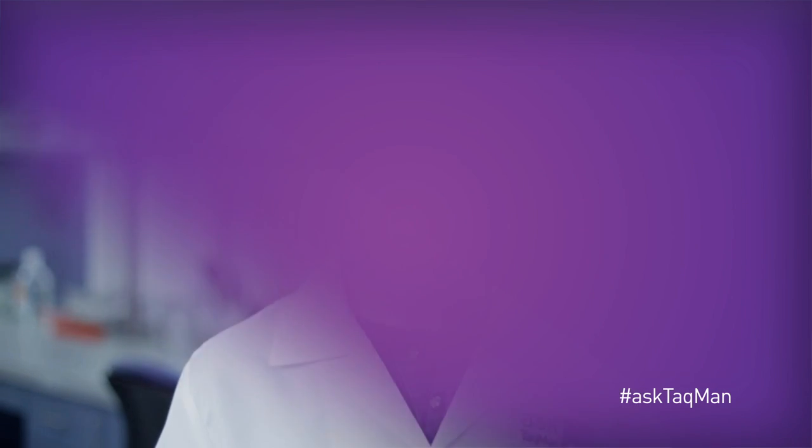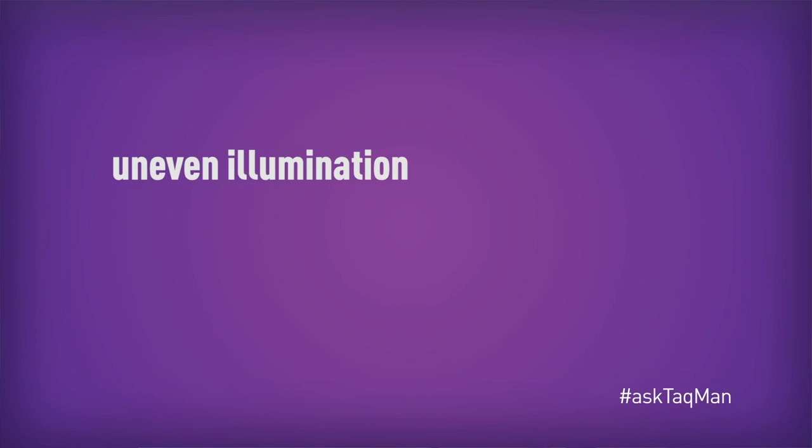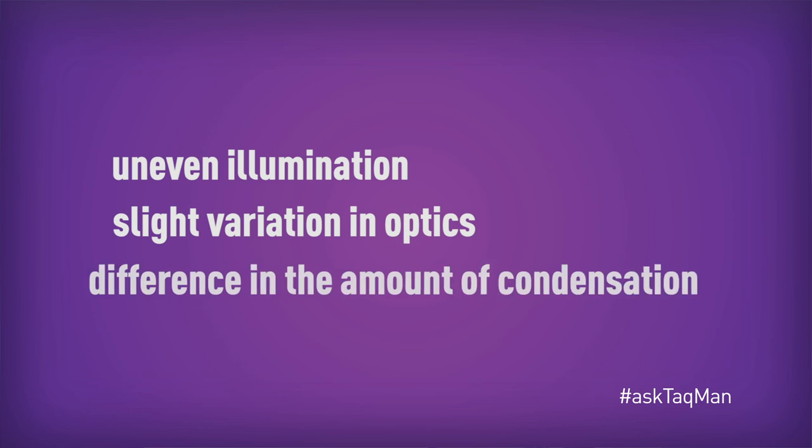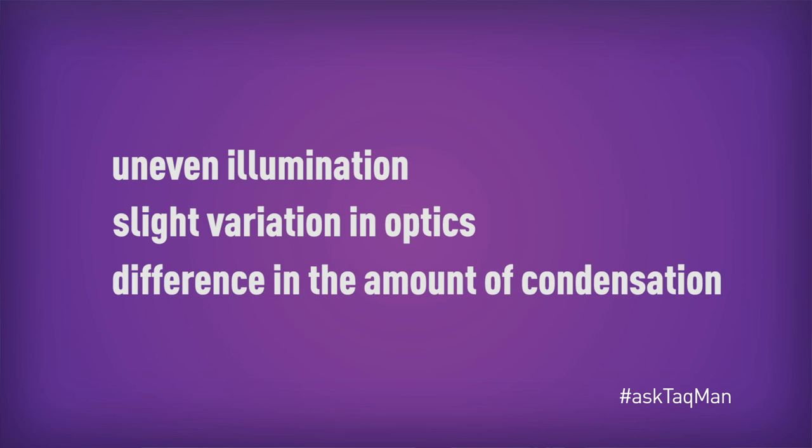Instead, ROX just sits there. Within any real-time PCR system, there are several potential sources of well-to-well variability in the excitation of the reporter molecule, and therefore in the detection of signal from the reporter. These include uneven illumination, slight variations in the optics from well-to-well, and even differences in the amount of condensation.